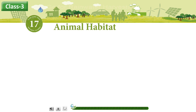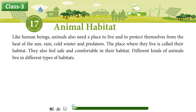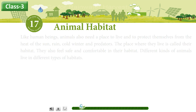Chapter 17: Animal Habitat. Like human beings, animals also need a place to live and to protect themselves from the heat of the sun, rain, cold winter, and predators. The place where they live is called the habitat. They also feel safe and comfortable in their habitat. Different kinds of animals live in different types of habitats.